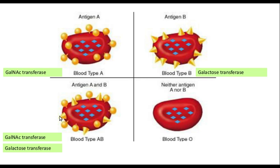There are people who have both the enzymes, so they have the H antigen, the A antigen, and the B antigen — these people will be grouped AB. There are yet another category of people who don't have either of the enzymes and they will be expressing only the H antigen. Since they don't express the A antigen or the B antigen, these people will be classified as O blood group.